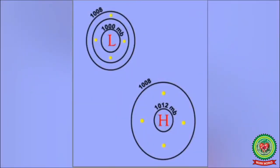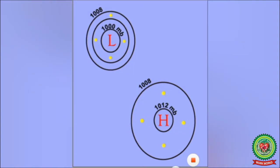Let us understand the pressure gradient and wind with the help of this diagram. In the first case, we can see that the isobars are drawn very close to each other, which means the wind speed here will be less. So, the more the pressure gradient, the higher will be the speed of the wind, and the less the pressure gradient, the lower will be the speed of the wind.